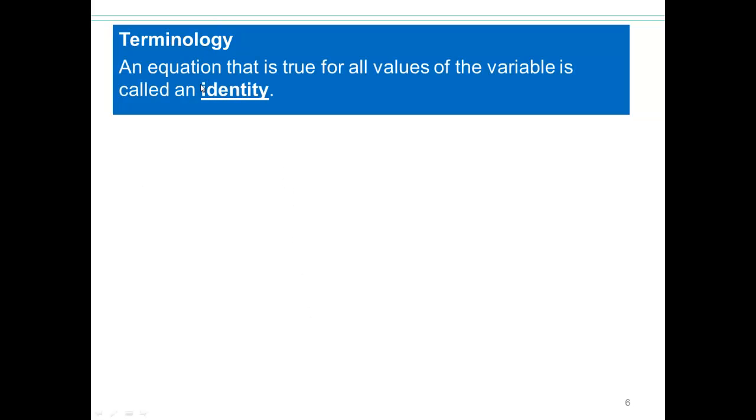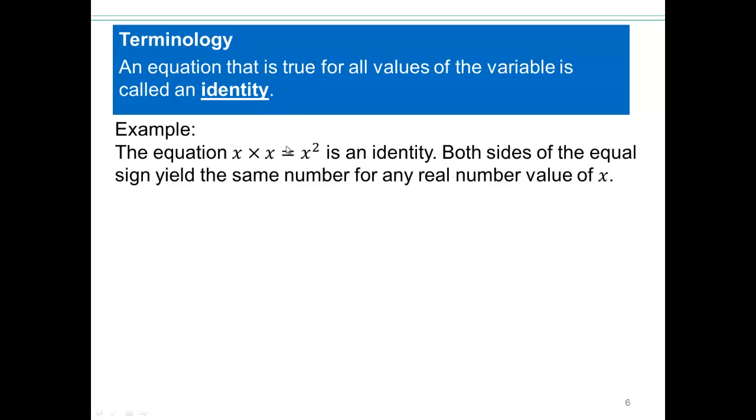First there are different kinds of equations. An equation which is true for all values of the variable is called an identity. For example, x times x equals x squared is an identity.